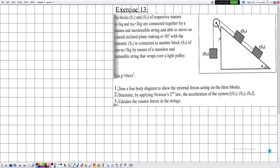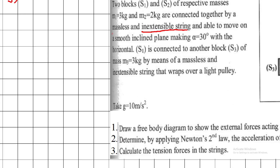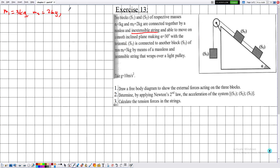The problem states: two blocks S1 and S2 of respective masses m1 = 3 kg and m2 = 2 kg are connected together by a massless and extensible string — this is important, which means tensions are transmitted equally at the ends of the string. They are able to move on a smooth inclined plane (smooth means no friction exists) making an angle alpha = 30 degrees with the horizontal. S1 is connected to another block S3 of mass m3 = 3 kg by means of a massless extensible string that passes over a light pulley, so the mass of the pulley is neglected.